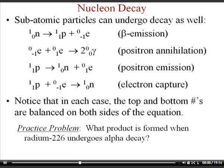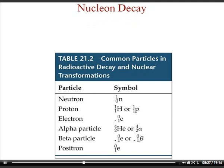Practice problem: What product is formed when radium-226 undergoes alpha decay? We write radium-226 emitting an alpha particle (helium-4). The top number must be 222 and the bottom number must be 86 to conserve nucleons. Element 86 on the periodic table is radon, so radium-226 turns into radon-222. The page also reviews symbols for neutrons, protons, electrons, alpha particles, beta particles, and positrons.